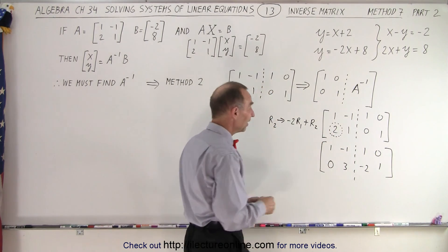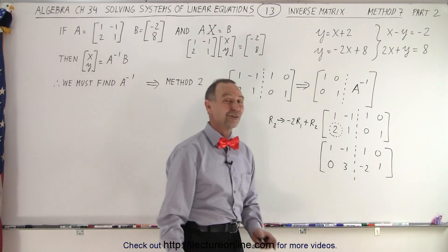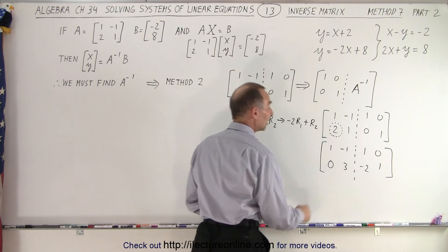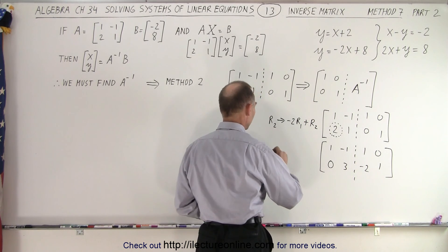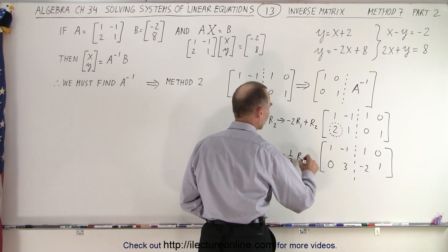But now, unfortunately, this 1, which we want to be a 1, is now turned into a 3. So now we have to take that whole row and divide it by 3 to turn this back into a 1. So we're going to take row 2 and replace it by 1 third row 2.